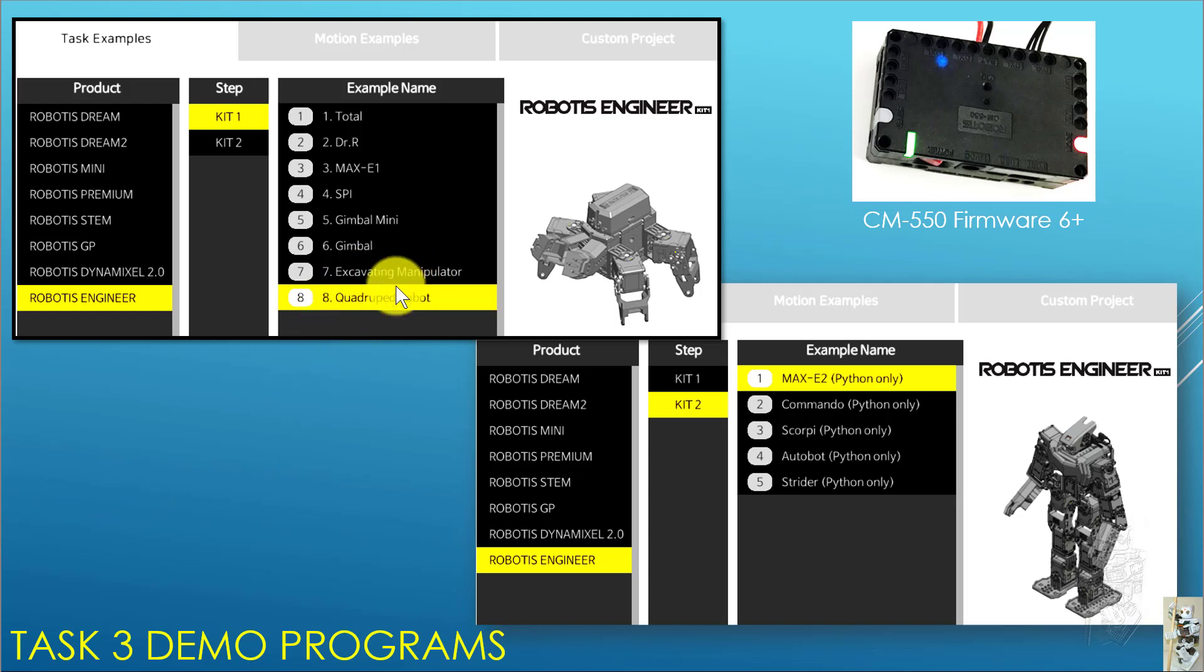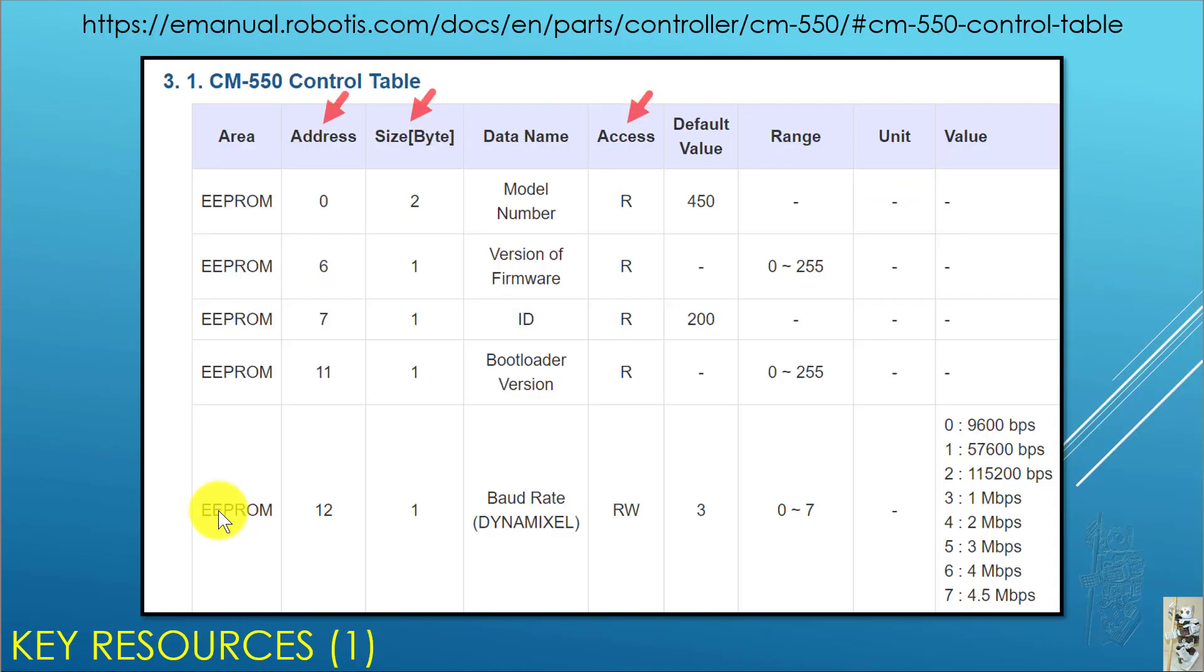So what I did is I take the Quattropet robot which is in Task 3 and I convert it to MicroPython. And mainly in this presentation I will show you some of the highlights of the issues and how to solve them. And then at the end I also show you a website where you can download the complete code, the complete translation of the Quattropet robot in Python so you can play with it.